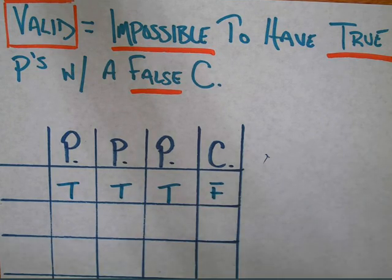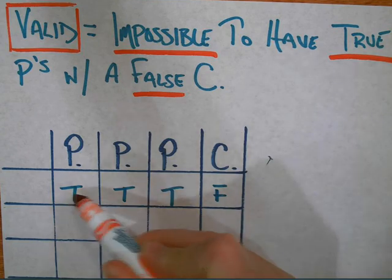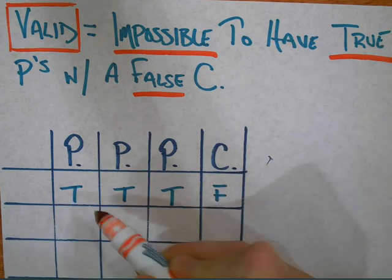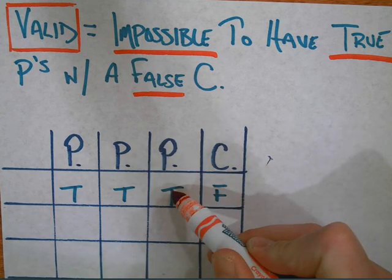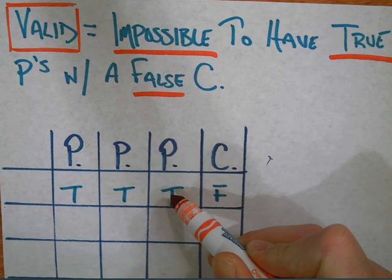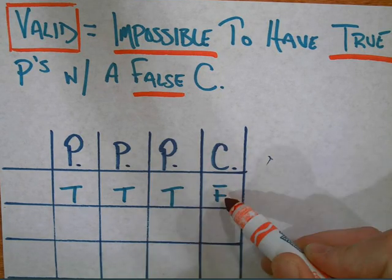I'm digging for my red marker here. Here we go. If you come across a row where we end up with true premise, true premise, true premise, well then, according to validity, it has got to have a true conclusion.